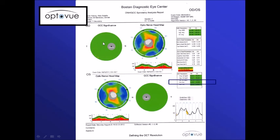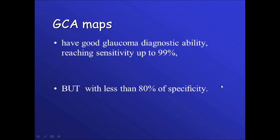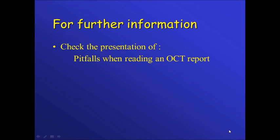One important parameter in the ganglion cell complex is the focal loss variance (FLV). Loss variance is similar to standard deviation — there is a global loss variance and a focal loss variance. It was found that focal loss variance is highly significant for detecting abnormalities in glaucoma. In general, the ganglion cell map has good diagnostic quality, reaching a sensitivity up to 99%, but with less than 80% specificity. For further information, please check the presentation on pitfalls when reading an OCT report.